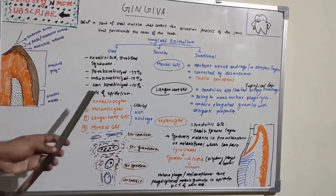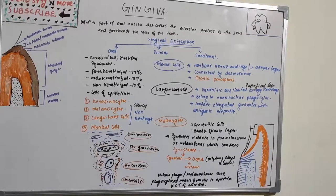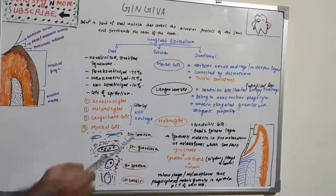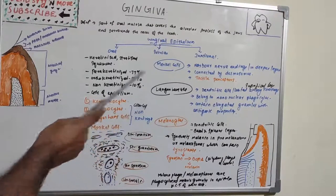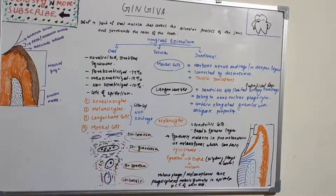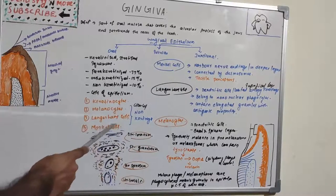The cells of epithelium are keratinocytes and non-keratinocytes. Non-keratinocytes are also known as clear cells. Keratinocytes produce keratin, while non-keratinocytes have other functions. There are three types of non-keratinocytes in the oral cavity: melanocytes, Langerhans cells, and Merkel cells.